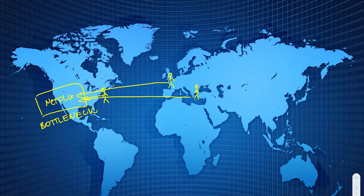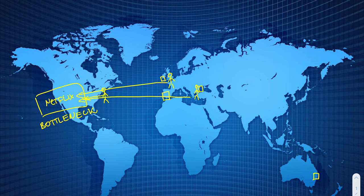This is where CDN comes in. CDNs are just computers with storage that have copies of the videos. For example, you still have the Netflix servers in California, but now you have a CDN somewhere in Spain or Portugal, some in Ireland, and some in Bulgaria and Australia as well. If you're based in London and want to stream a video, you won't connect to Netflix in California — you'll actually connect to the endpoint in Ireland.